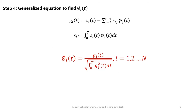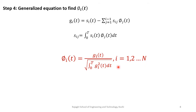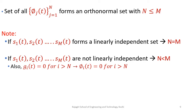Continuing this procedure, in the i-th iteration φi(t) can be determined using the intermediate function gi(t) = si(t) − Σⱼ₌₁^(i−1) sij · φj(t), where sij = ∫₀ᵀ si(t) · φj(t) dt is the projection of the i-th signal on the j-th basis function. Then φi(t) = gi(t) / √E[gi], with i varying from 1 to N.